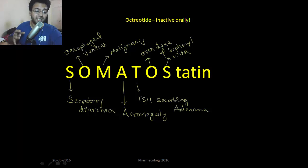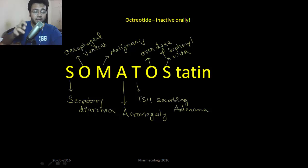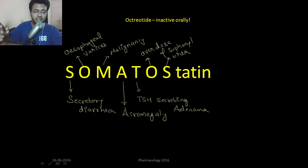The next drug is octreotide. Octreotide is a somatostatin analog. Somatostatin is released by the delta cells of the islets of Langerhans and is a universal inhibitor — it can inhibit every sort of secretion. Octreotide, as a somatostatin analog, can be used in secretory diarrheas, esophageal varices, malignancies, acromegaly, and TSH-secreting adenomas.